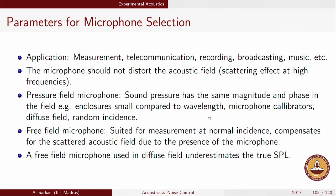The pressure field microphone, which has a slight variant called the diffuse field microphone, is used when sound pressure needs to be measured in a small enclosure. The diffuse field microphone, as the name suggests, is more appropriate in a larger enclosure. Free field microphones are typically used in anechoic chambers, where they face only one incident wave.